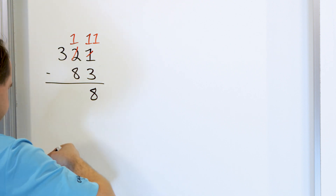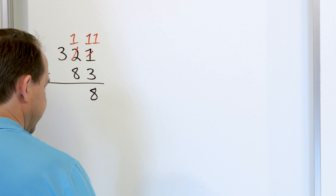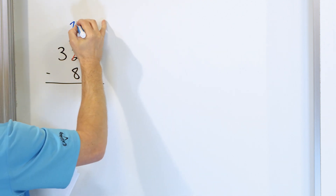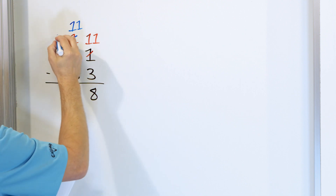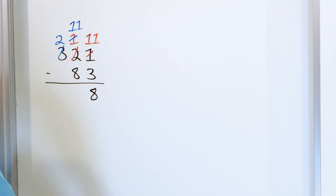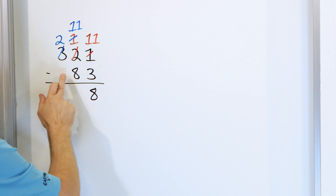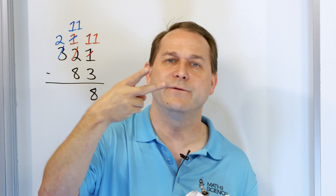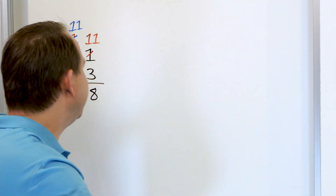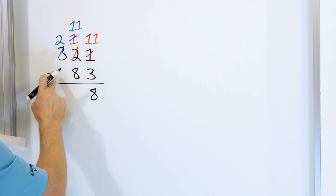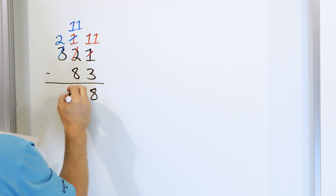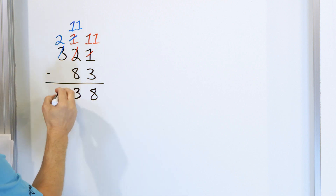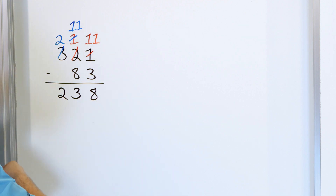Now we try to say 1 minus 8. We can't do that either because 1 is not big enough, so we change it to an 11 by making the 3 into a 2. So now we have 11 minus 8: start with 11 and go down 10, 9, 8, 7, 6, 5, 4, 3. We land on 3, so 11 minus 8 is 3. Finally we have 2 minus nothing — 2 minus 0 is 2. So we get 238.